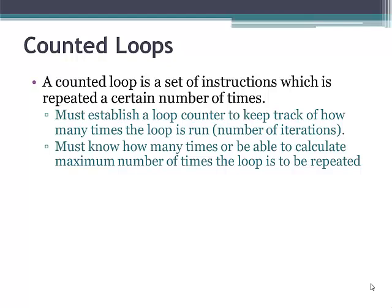The last type of loop we'll be looking at is a counted loop. A counted loop is a set of instructions which is repeated a certain number of times. In this case, you must establish a loop counter to keep track of how many times the loop is run, in other words, to keep track of the number of iterations. You must know how many times you want to run this loop or be able to calculate that number.